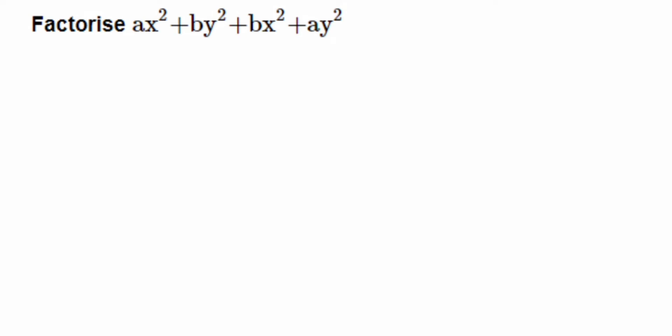But which terms to group? If you look at the question, we have x² here and x² here, so x² is common in these two terms. The next ones, by² and ay², have y² in common. You can also group ax² and ay² — then a will be common — and by² and bx² with b common. Either way, you will get the same answer at the end.